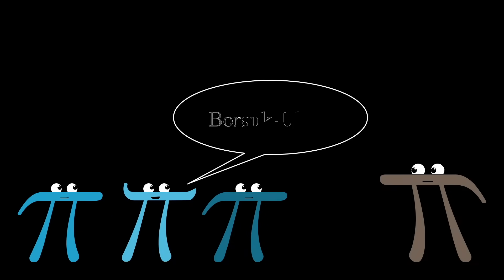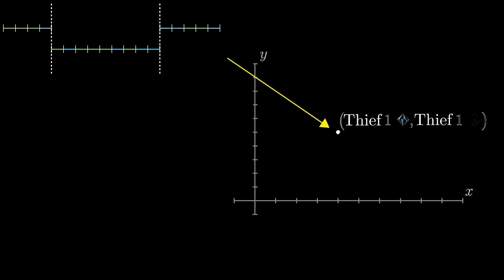Your brain should be burning with the thought of Borsuk Ulam at this point. Specifically, you might construct a function that takes in a given necklace allocation and spits out two numbers, the total length of sapphire belonging to thief one, and the total length of emerald belonging to thief one.